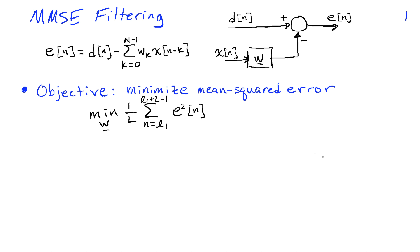Recall that the minimum mean squared error filtering problem assumes that we're looking for an FIR filter with coefficients W_K that minimizes the error between a signal D of N and the output of the filter. So our objective is to minimize the mean squared error by choosing W, and we're going to look at a range of times from L1 to L1 plus capital L minus 1.